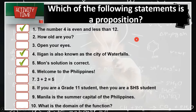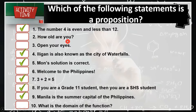An activity: which statement or statements below is or are considered as a proposition? Numbers 1, 4, 5, 7, 8, and 9 are considered to be propositions since these are declarative sentences, and each is either true or false. Number 2 is not a proposition because it is an interrogative sentence. Number 3 is an imperative sentence because it gives a command. Also, number 6 is an exclamatory sentence, and number 10 is an interrogative sentence.